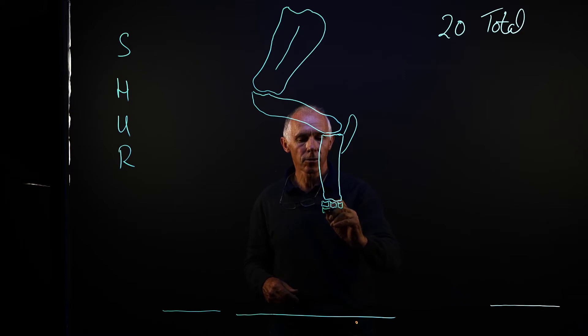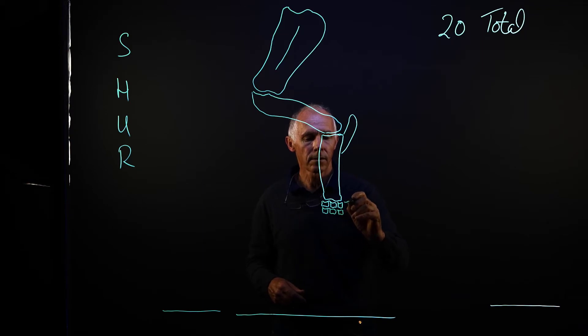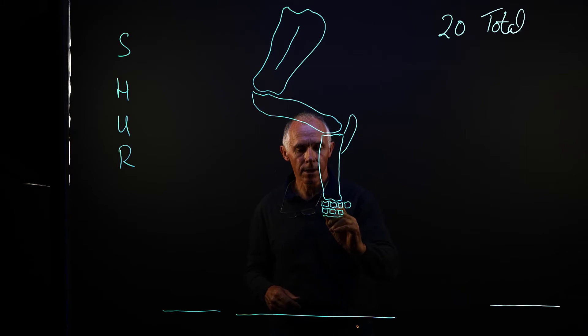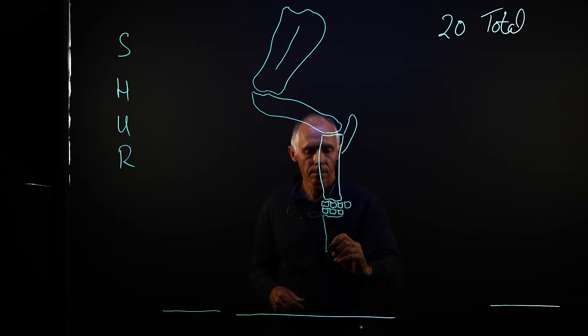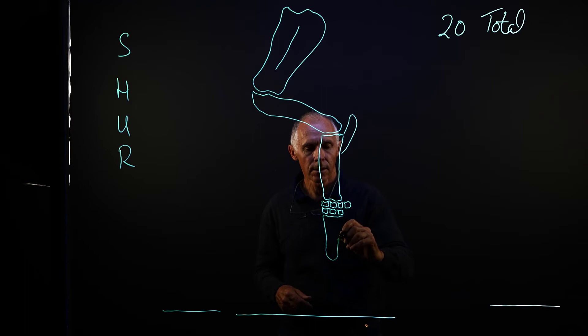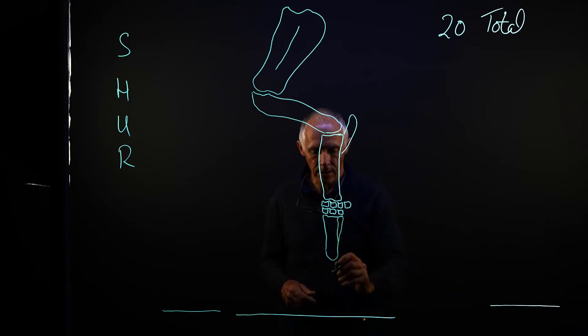Now we're down to the carpal joint. We have two rows of small bones or regular shaped bones that form the carpal joint. Below that we have the metacarpal or cannon bone and its associated small bones, the two small metacarpals.